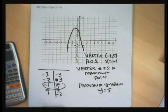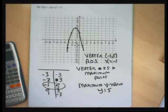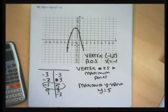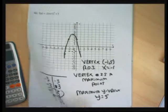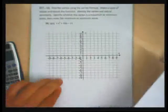Vertex is (−1, 5), axis of symmetry is x equal to −1. The vertex is a maximum point because it's at the top of the graph. There won't be any point on this graph with a y-coordinate bigger than 5, so the maximum y-value is y equal to 5.